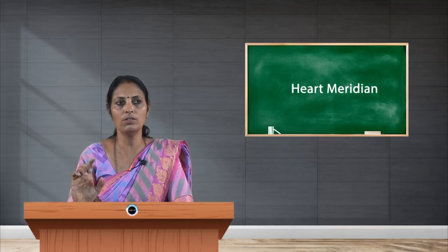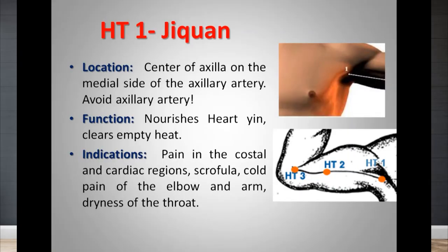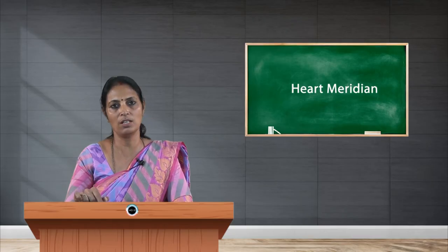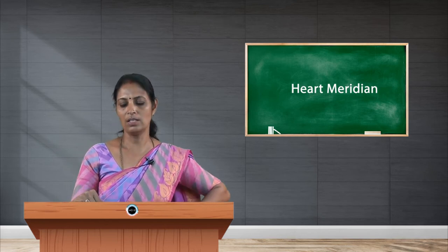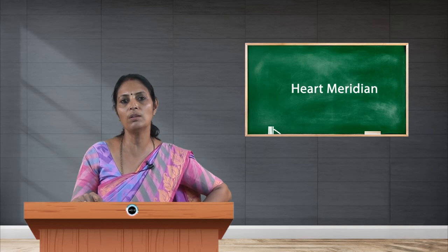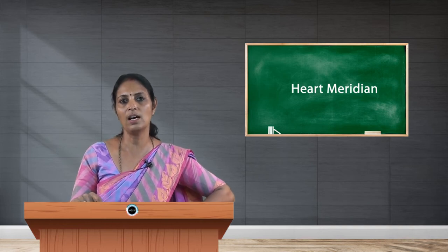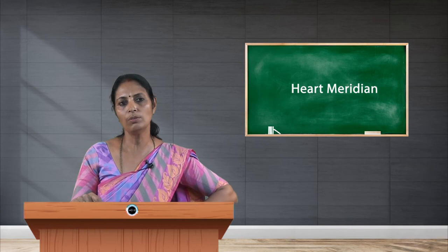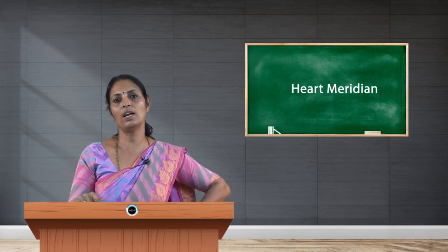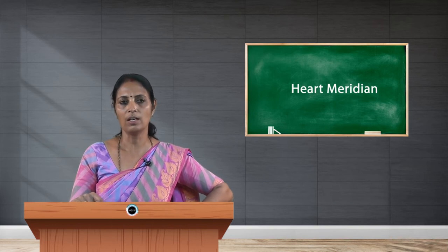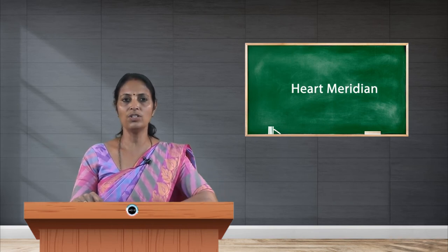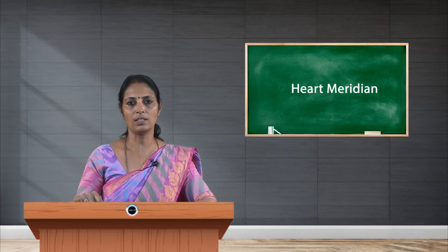Heart 1 is an important point by its location — it is located at the center of the axilla, medial to the axillary artery. It is known as Jiquan. It is considered a partially dangerous point because it is situated beside the axillary artery. We need to palpate the axillary artery and needle medial to that point. It is used mainly in case of any pain in the axilla.